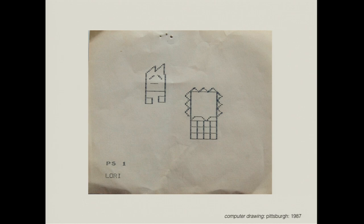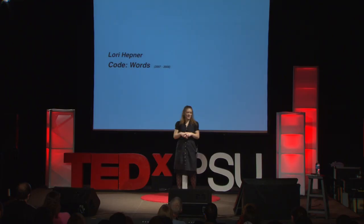This was done with a program called Logo. There was a little turtle triangle — some of you may remember this. And you didn't draw with a mouse; you drew with math, you drew with programming. So these were my drawings. This is how I learned to make imagery, just along with the crayons and the colored pencils and all of the things that normal children learn to draw with.